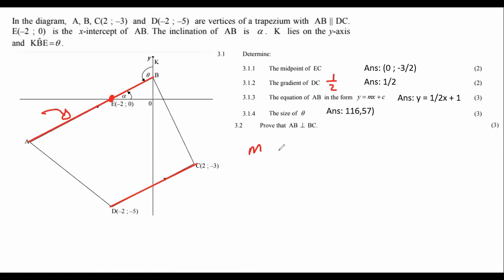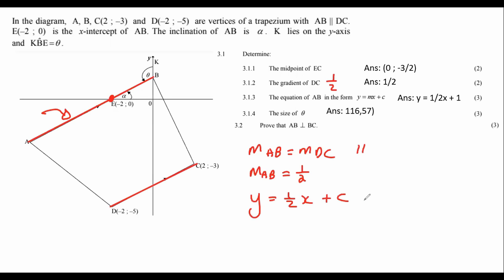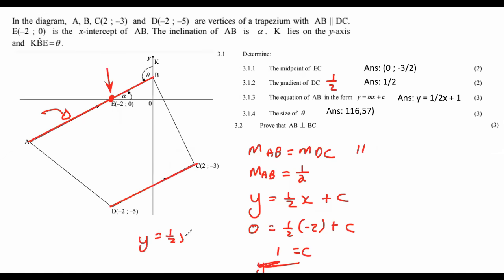The gradient of AB is the same as the gradient of DC because they are parallel. So the gradient of AB is going to be a half. The equation of line AB would be y equals half x plus c. To find c, use a point on the line: plug in 0, get minus 2 plus c, so c equals 1. Therefore y equals half x plus 1.